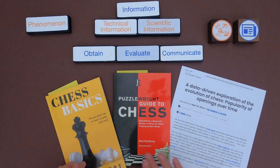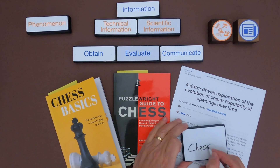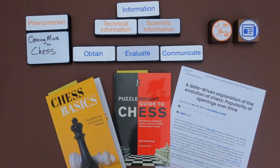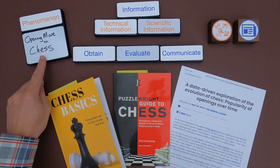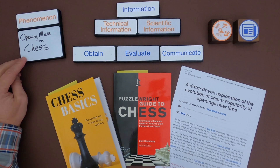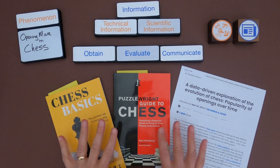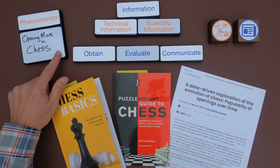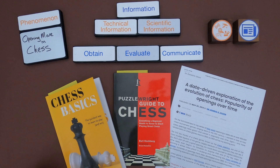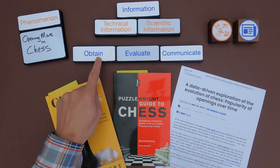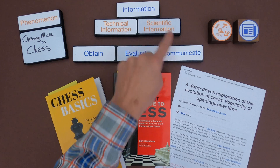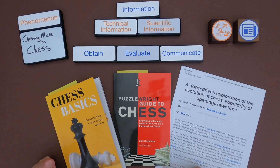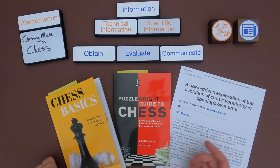For the second example, the phenomena is going to be related to chess — specifically the opening move in chess. I don't play a lot of chess, and I don't know much about it — that's the idea. We're going to gather information and try to figure out what would be a good opening move. I'd encourage you to pause the video, look at the linked pages, identify important information, identify if it's technical or scientific, and then communicate what your opening move would be as white or black. Then unpause and we'll see how our thinking compares.